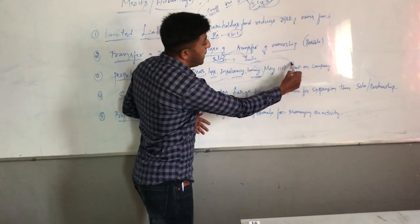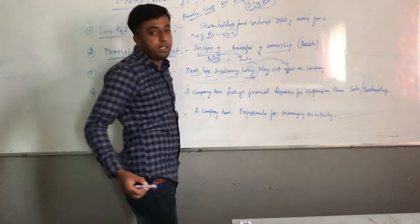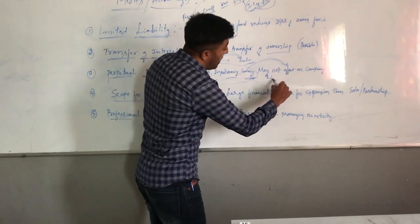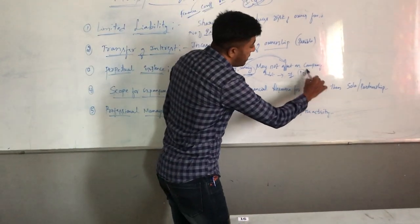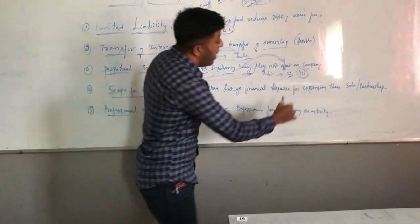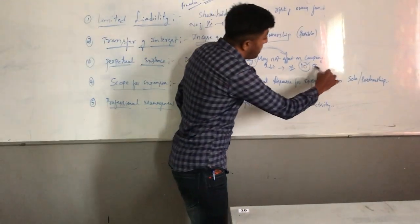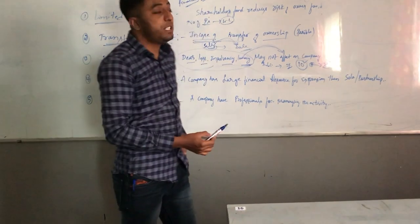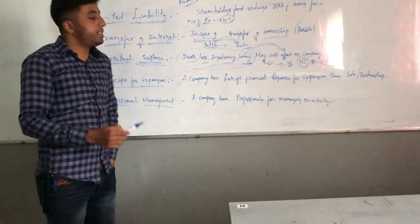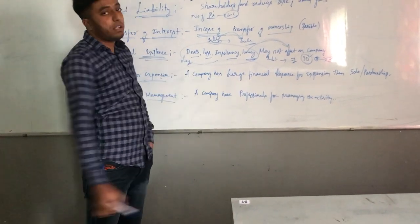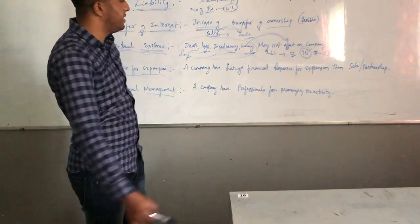The remaining partners in the company continue running the business. For example, in a public company, the minimum number of members is seven. Even in case of death of some members, the remaining members can continue. This means the life of the company is larger — perpetual existence.